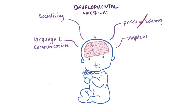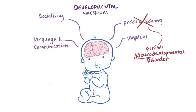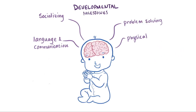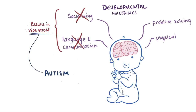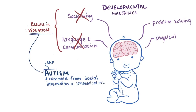The brain develops, and if one of these doesn't develop on schedule, depending on the severity, it may be described as a type of neurodevelopmental disorder — 'neuro' referring to brain. Especially when certain skills related to socializing and communicating don't proceed normally, it can result in isolation, which is where the name autism originated. Since 'auto' means self, autism refers to a condition where somebody might be removed from social interaction and communication, leaving them alone or isolated.